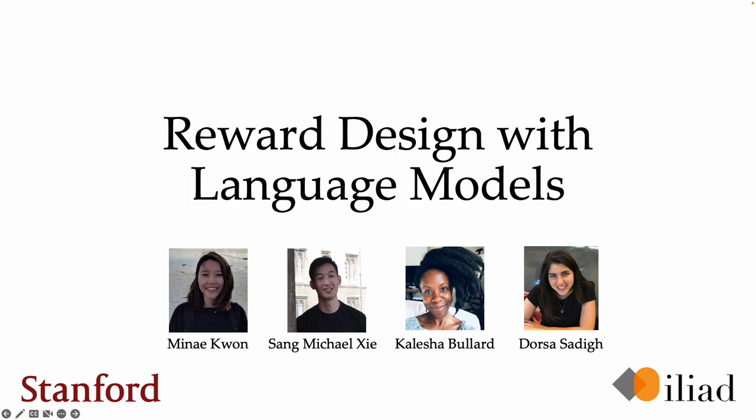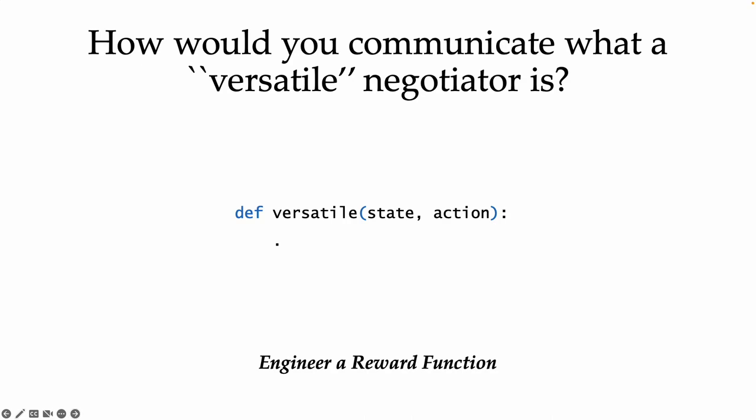We tackle the problem of making it easier for humans to specify rewards for an RL agent. As an example, imagine you're training a negotiation agent to represent you in an upcoming negotiation. You're dealing with some important clients, so you want your agent to take a versatile approach. How would you write down a reward for versatile behavior? Objectives like these are easy for humans to understand, but not straightforward to write down for an RL agent.